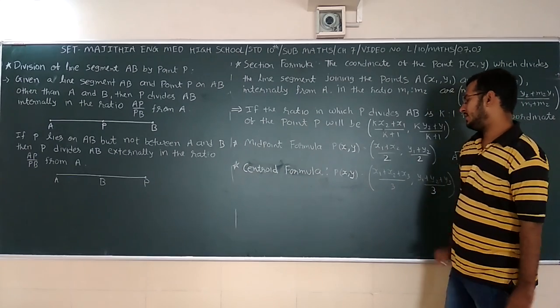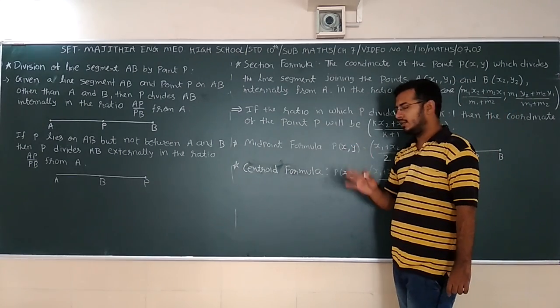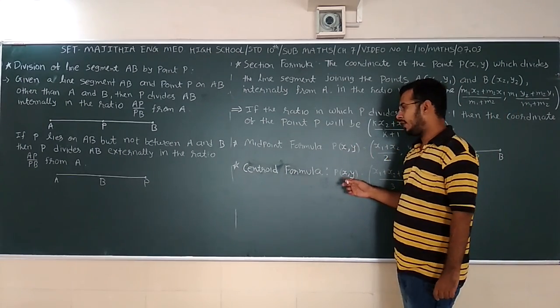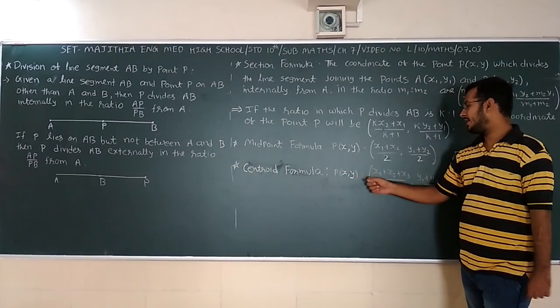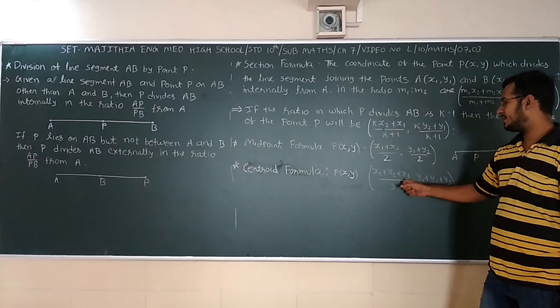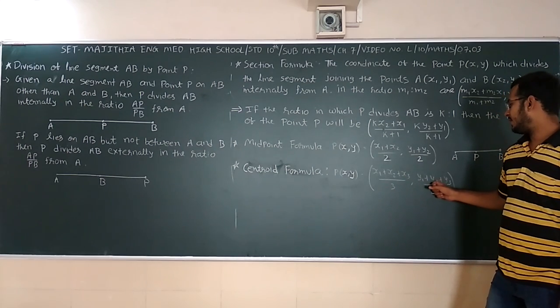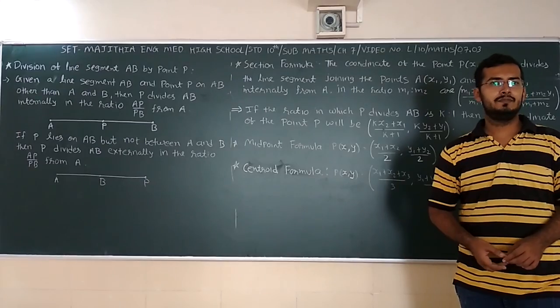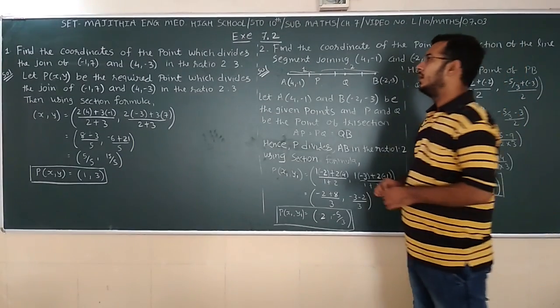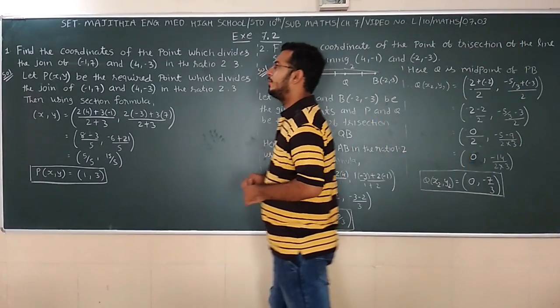Centroid formula, this formula in that there is three points are there. And we have to find the center in between points. So that is G(X,Y) is equal to X1 plus X2 plus X3 by 3, Y1 plus Y2 plus Y3 by 3. Let's start with the exercise 7.2.